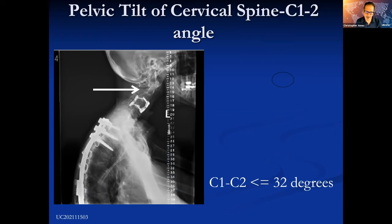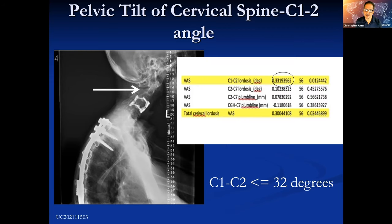A parameter that didn't make it into our classification version one, but is important to look at, is the hyperlordotic deformity at the occipital cervical junction. When you see that sort of scalloping — like in the first case — it's important to look below, as it probably indicates a long-standing cervical deformity with compensation. The value we use is around 30 degrees. When the C1-C2 lordosis is beyond about 32 degrees, it implies you need to look for some adjacent deformity driving that translational deformity of the head. This correlated to neck pain scores, probably through muscular expenditure and muscular compensation.